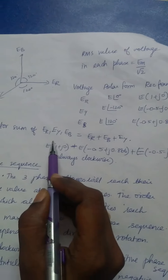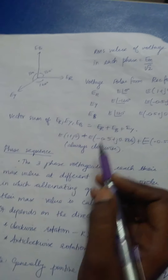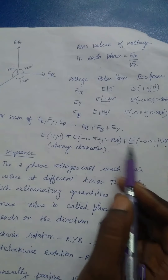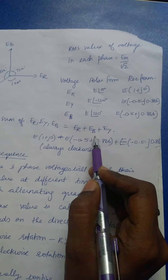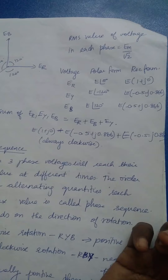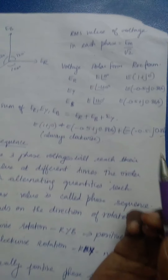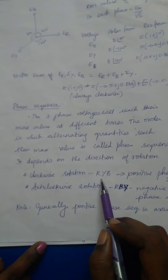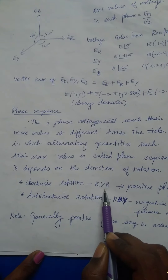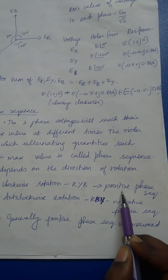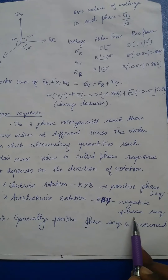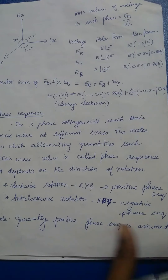The vector sum of all three phase voltages — ER plus EB plus EY — is in the clockwise direction. If the rotation is R, Y, B in the clockwise direction, then the sequence followed is positive sequence. If it is R, B, Y, then the sequence is negative sequence.